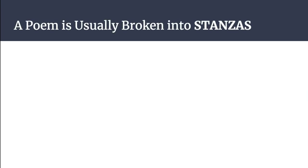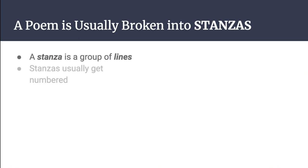A poem is usually broken into stanzas. This is one of our basic units of poetry. A stanza is a group of lines. Stanzas usually get numbered: stanza 1, 2, 3, 4, etc.